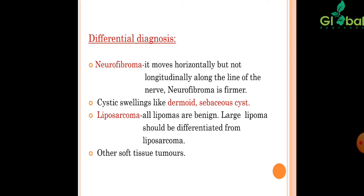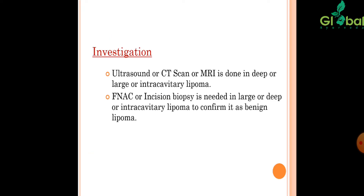Differential diagnosis includes Neurofibroma — it moves horizontally but not longitudinally along the line of the nerve, and is firm. Cystic swellings like dermoid and sebaceous cyst are also differential diagnoses. Liposarcoma: all lipomas are benign, but large lipomas should be differentiated from liposarcoma. Other soft tissue tumors are also considered.